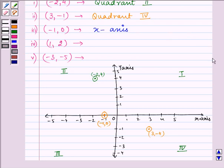Proceeding on further like this only. Now we have (1, 2). Both are positive. So that means (1, 2), and it must lie in the first quadrant